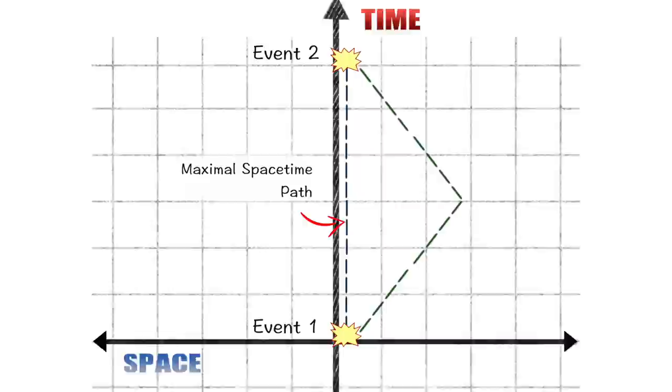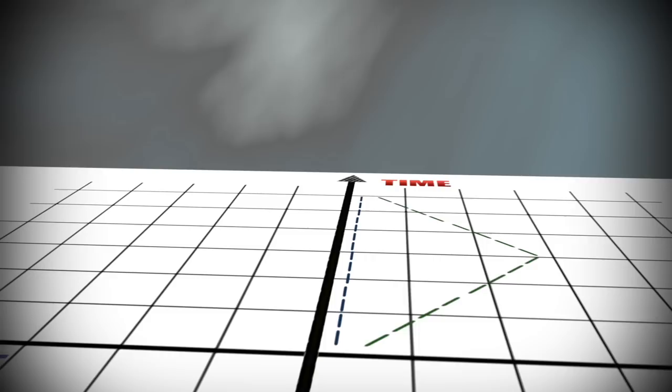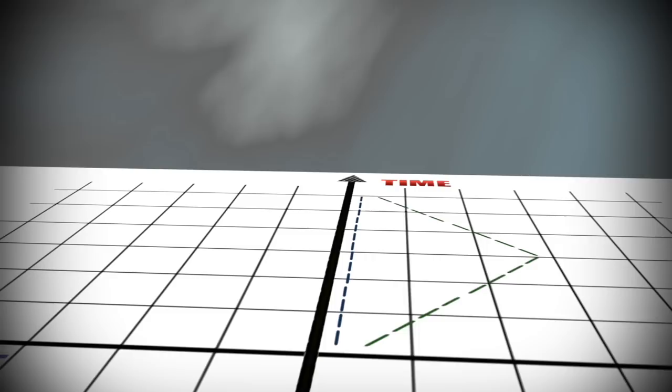But, in general relativity, the correlation between such frameworks begins to shift. Because, as it turns out, inertial paths through space-time are no longer necessarily the longest.